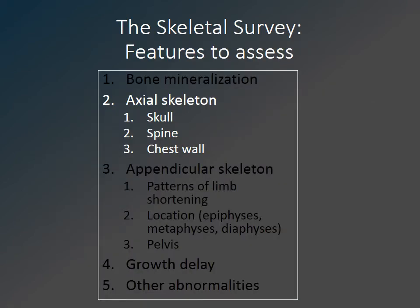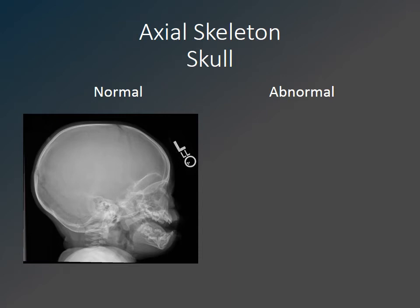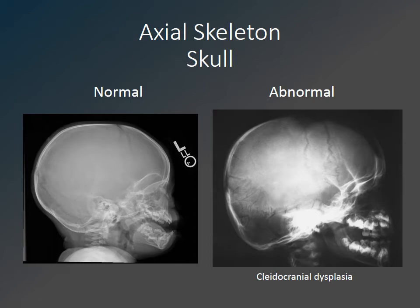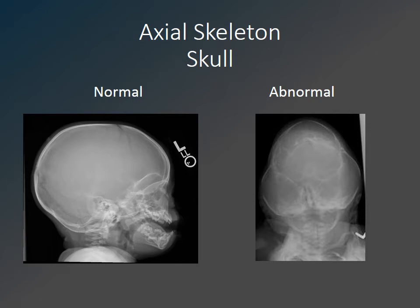Next we will move on to an assessment of the axial skeleton, including the skull, spine, and chest wall. Many skeletal dysplasias have skull abnormalities of ossification, shape, and configuration. On the right, a lateral skull radiograph in a patient with cleidocranial dysplasia demonstrates numerous wormian bones — intrasutural bones seen within the coronal and lambdoid sutures — with a broad differential including osteogenesis imperfecta, pycnodysostosis, and hypothyroidism. An AP skull radiograph in thanatophoric dysplasia demonstrates a cloverleaf configuration resulting from diffuse craniosynostosis of all sutures except the squamosal suture.